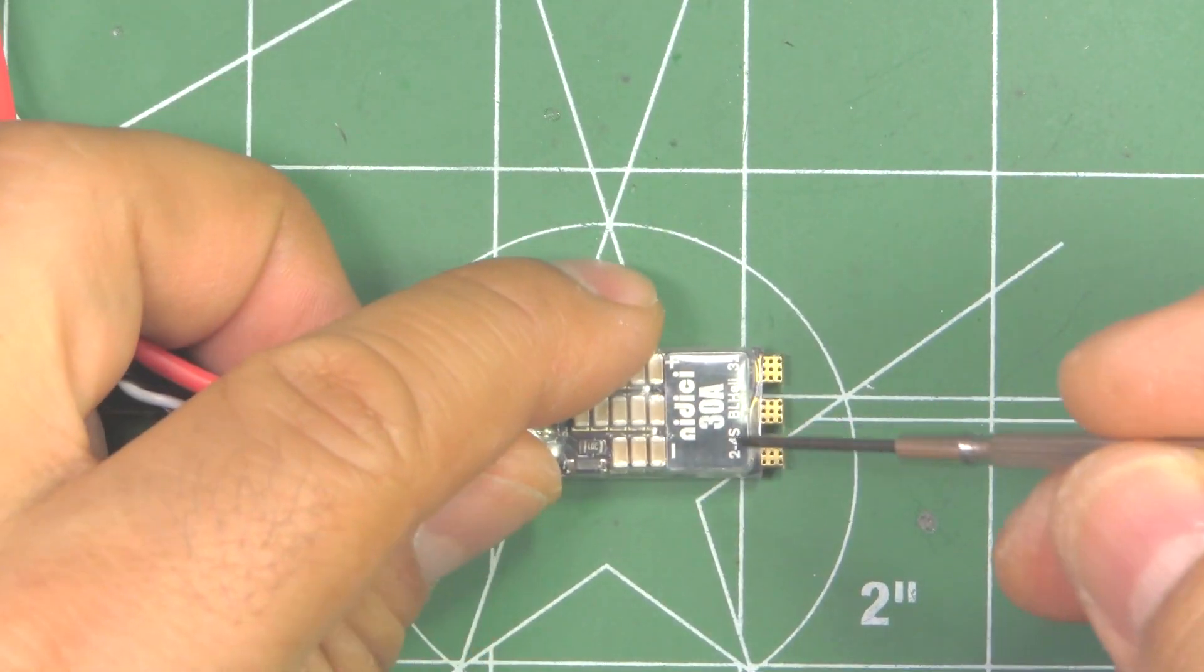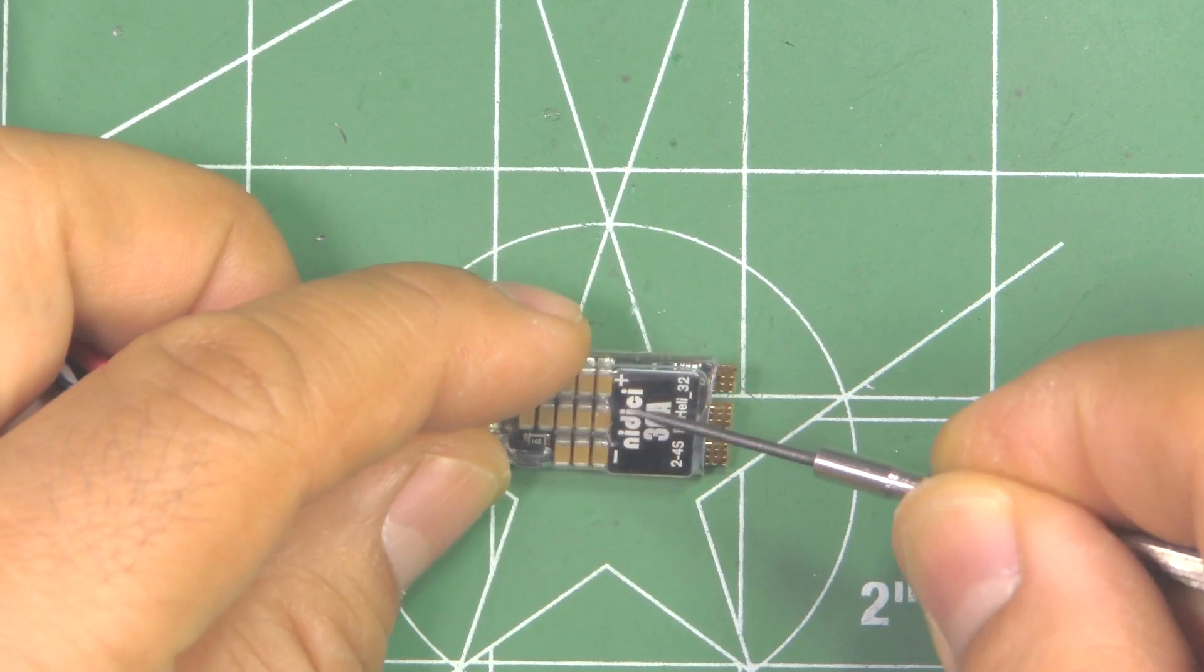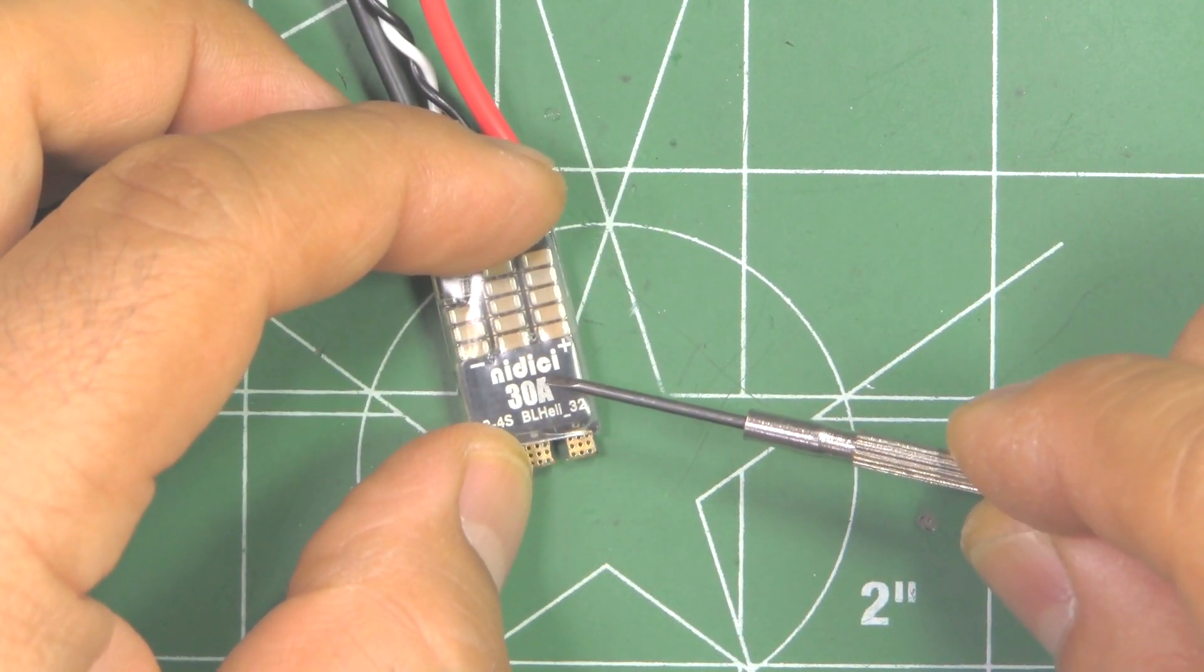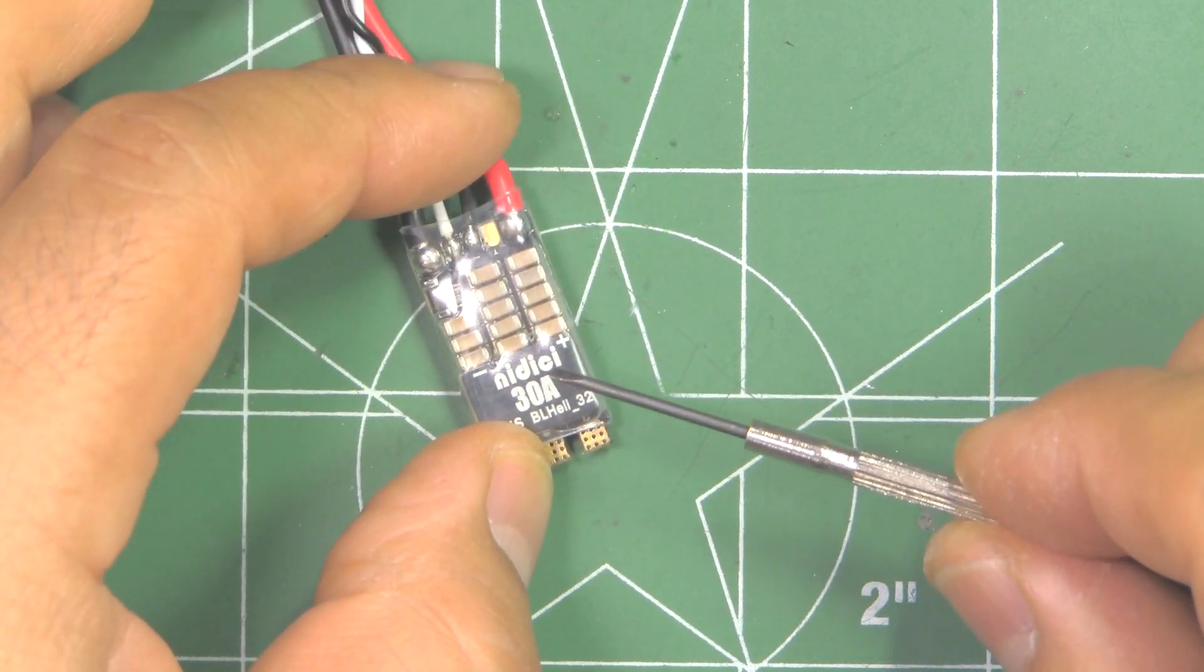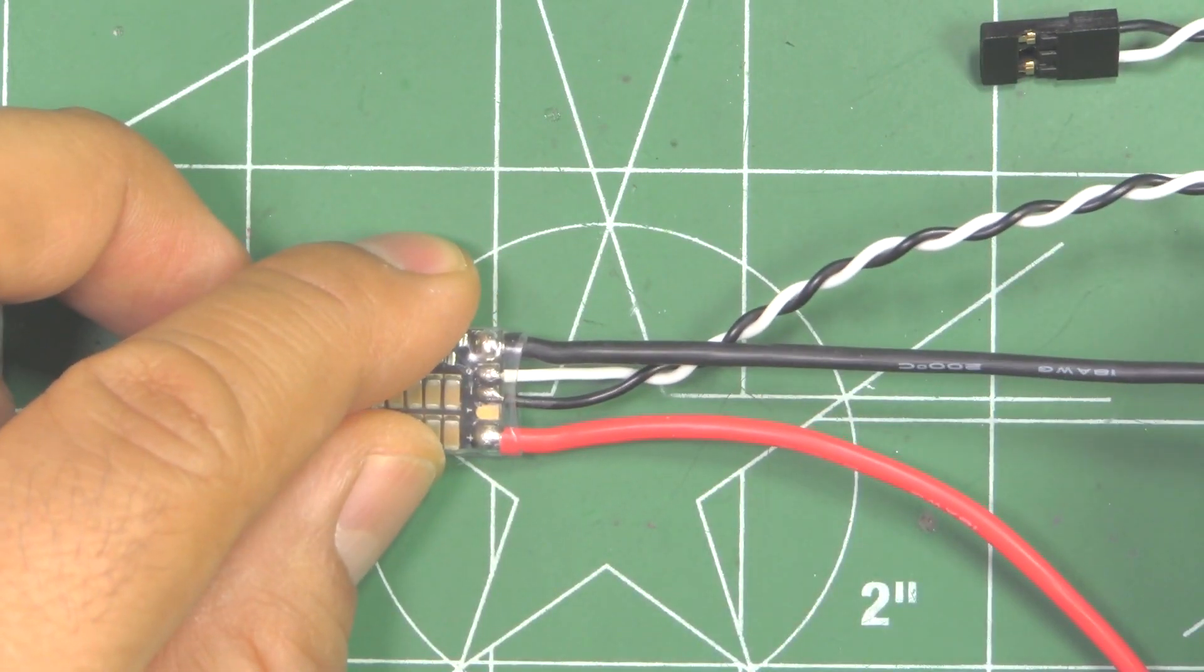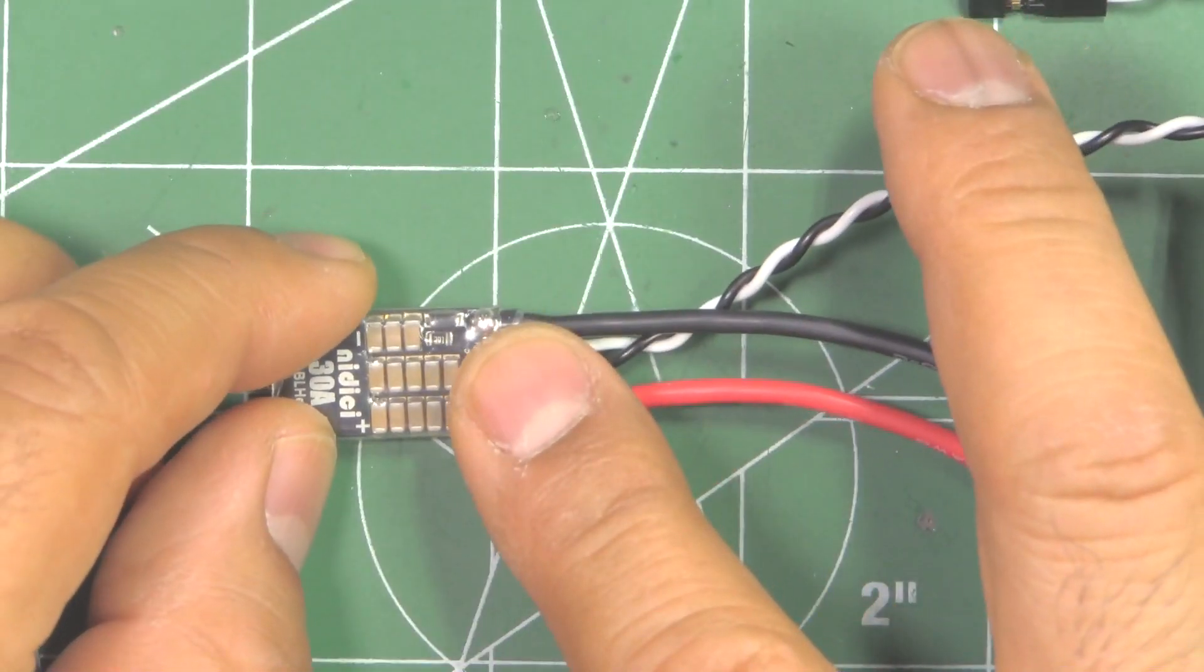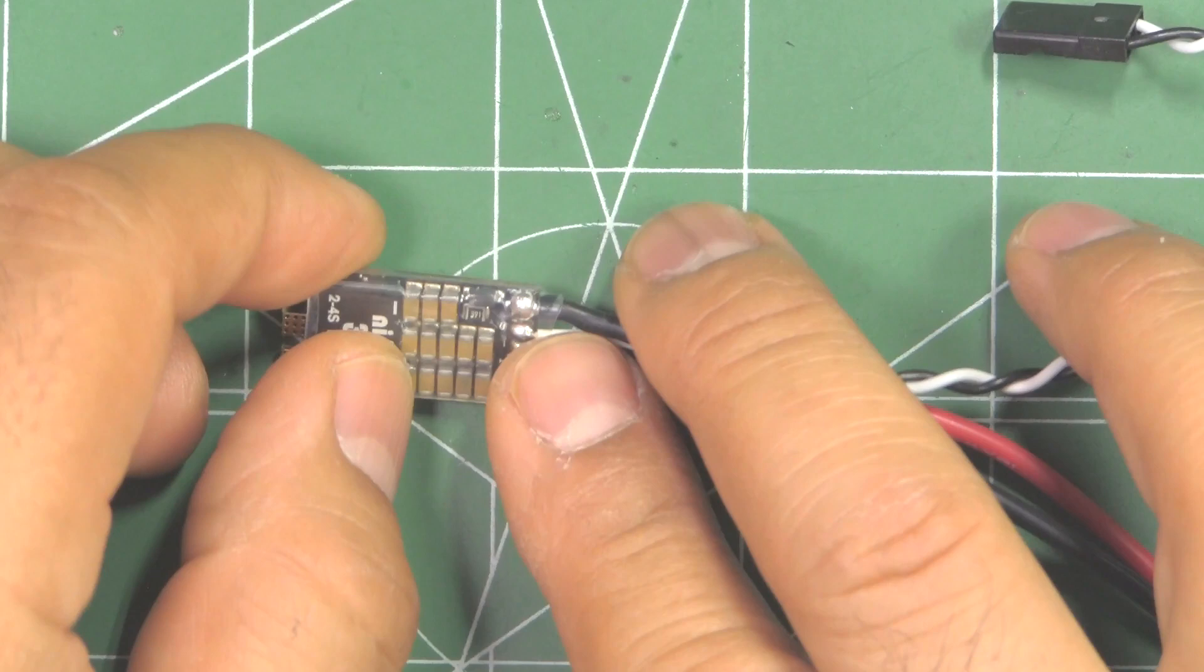Some of the features it has is what they call opto, but it's not really opto-isolated. What they mean is it has no BEC. You're going to have to use your own voltage regulator or BEC to supply 5 volts to your flight controller. This comes pre-soldered with about 100 millimeters worth of power leads, that should give you plenty of length to get to PDB. It's supposed to be DSHOT 1200 compatible, that's one of the latest protocols.